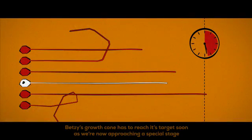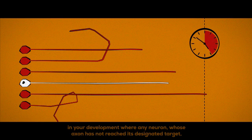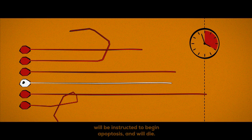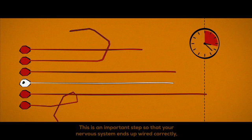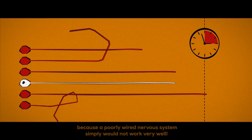Time is running out now. Betsy's growth cone has to reach its target soon as we're now approaching a special stage in your development where any neuron whose axon has not reached its designated target will be instructed to begin apoptosis and will die. This is an important step so that your nervous system ends up wired correctly because a poorly wired nervous system simply would not work very well.